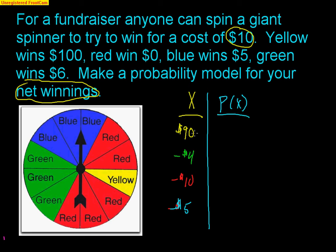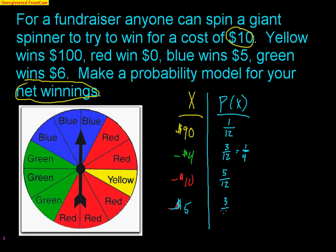So the possible net winnings are $90, negative $4, negative $10, or negative $5. Now we need the probabilities. The spinner has 12 spots total. Only 1 is yellow, so the probability of winning $90 is 1/12. There are 3 green spots, so the probability of negative $4 is 3/12, which reduces to 1/4. There are 5 red spots, so the probability of negative $10 is 5/12. And there are 3 blue spots, so the probability of negative $5 is 3/12, or 1/4.